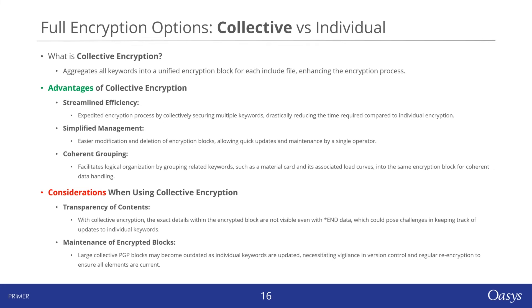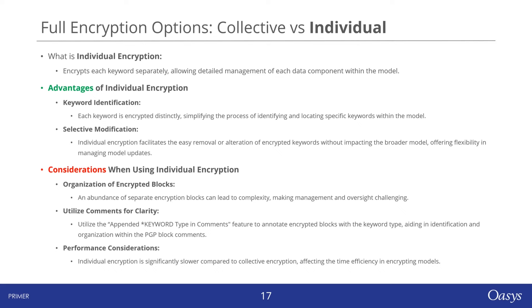Individual encryption means encrypting each keyword separately, so each keyword gets its own encryption block. The main advantage is the ease with which you can identify and manage each keyword block, which is particularly useful when you need to delete or add a new keyword. This method allows for a more structured organization of keywords. However, managing a large number of encryption blocks can be challenging. To improve clarity, it's recommended to use comments effectively — by adding comments that describe the keyword type, you can better understand the contents of each encryption block. Generally, individual encryption is slower than collective encryption, which might affect efficiency when encrypting large models.